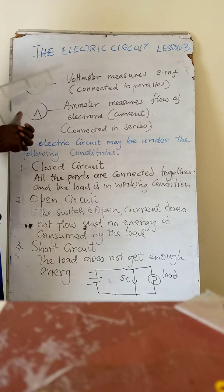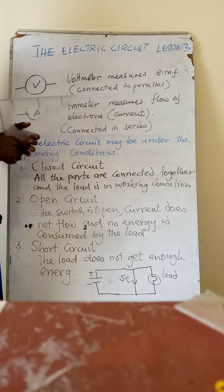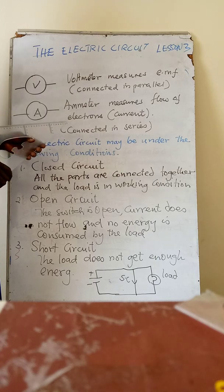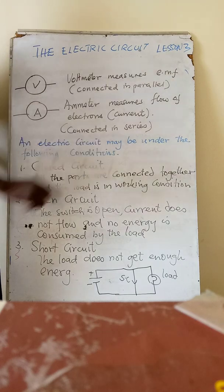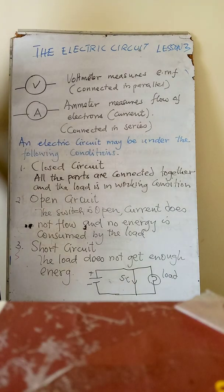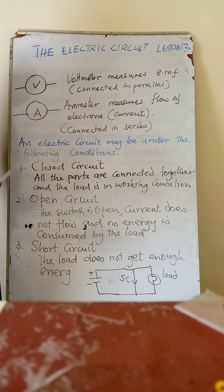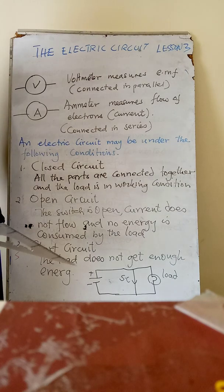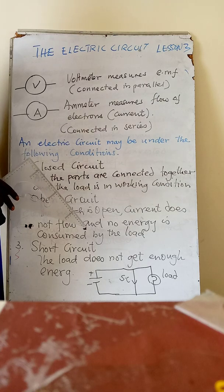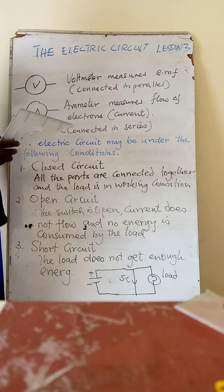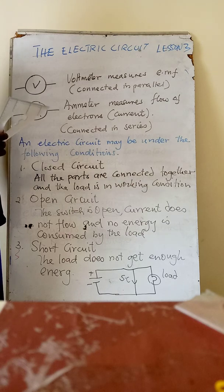A voltmeter is an electrical device that is used to measure electromotive force — it is a force that sets the electrons in motion. Electromotive force is a force that triggers the electrons to flow in a circuit.